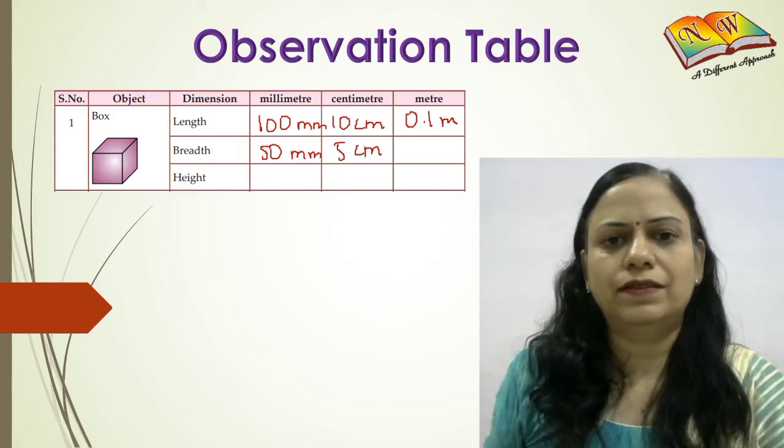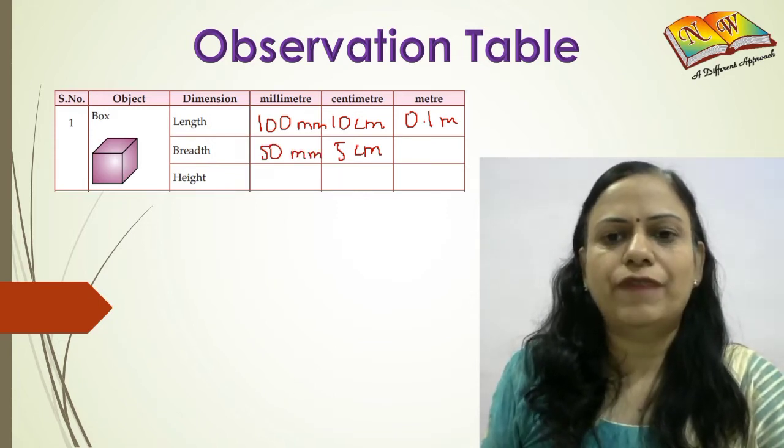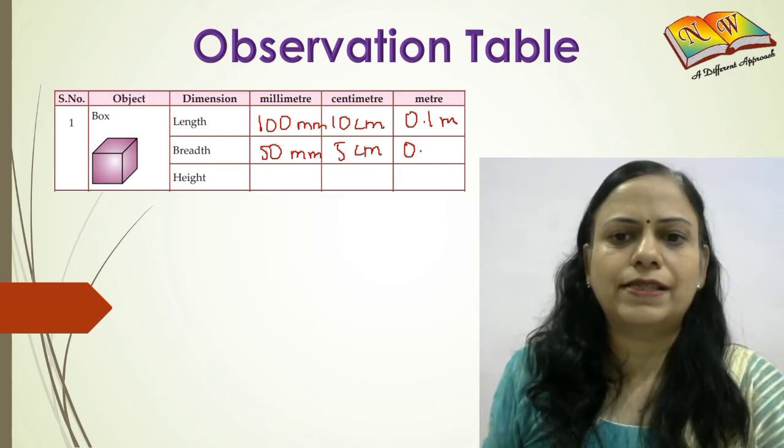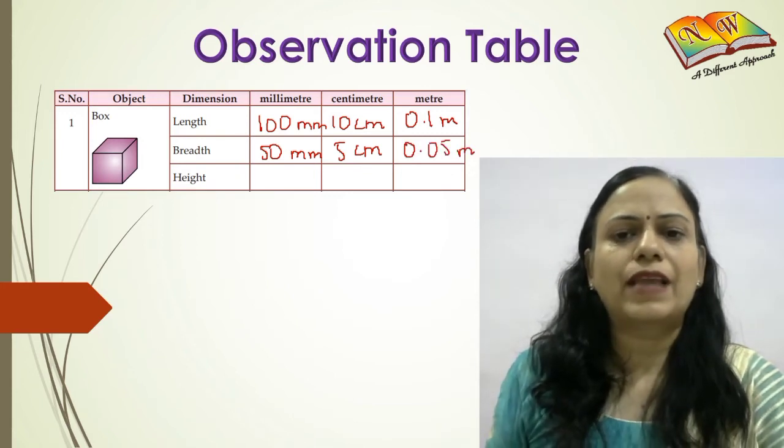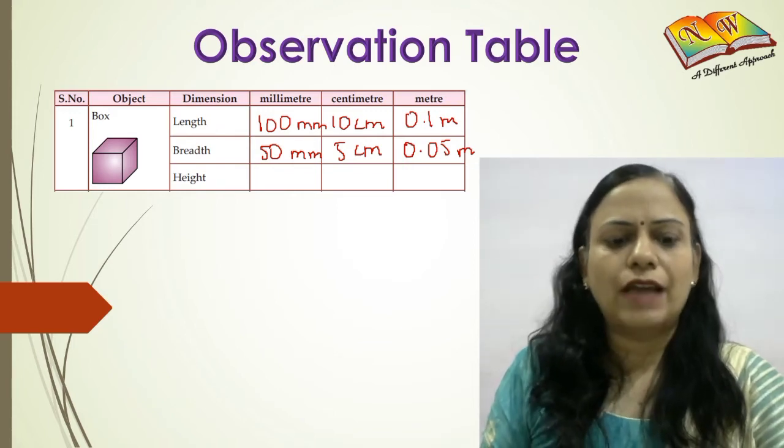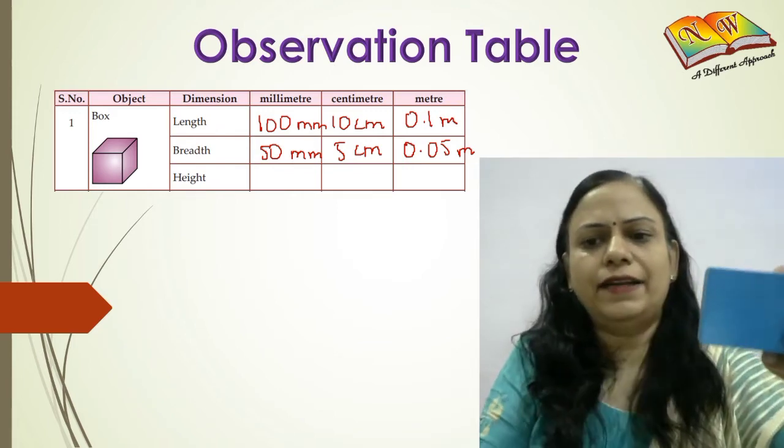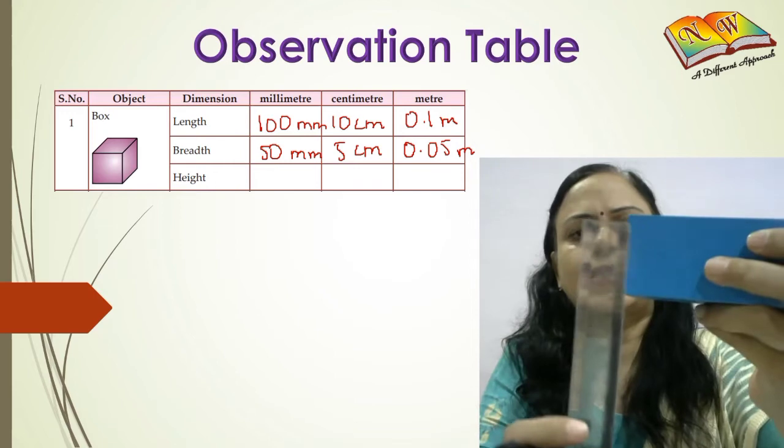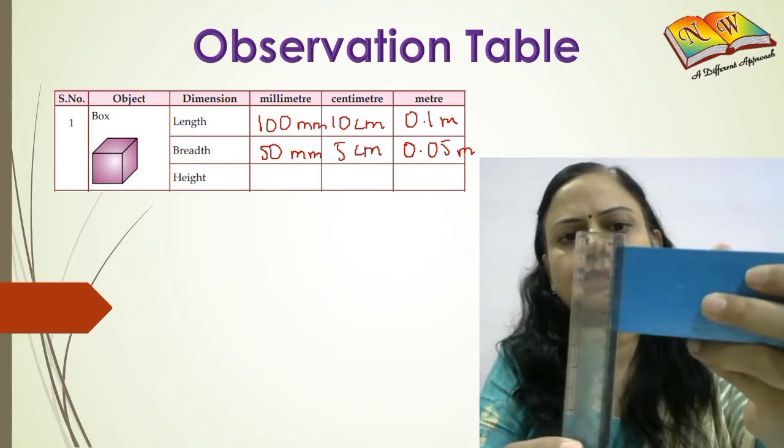As the breadth in millimeters, and if you divide it by 100 it makes 0.05 meters as the breadth in meters. Now for the height, this is the height. Again I'll use the scale and you can see that the height...